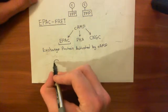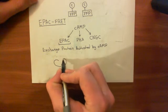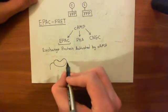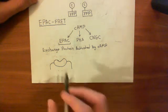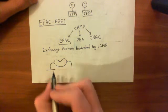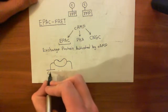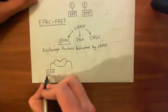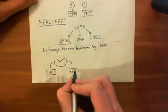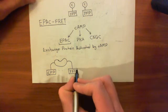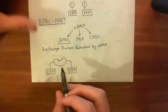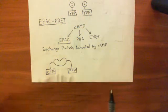So basically, when EPAC is in its non-activated state - let's draw our cyclic AMP binding site here - it has a conformation like this. It's often drawn like this in cartoons. So what we can do is attach a cyan fluorescent protein to one end of this EPAC, and attach a different fluorescent protein to the other end. The basic underlying principle here is that when cyclic AMP binds to this, it will change conformation and move these two fluorophores further apart.